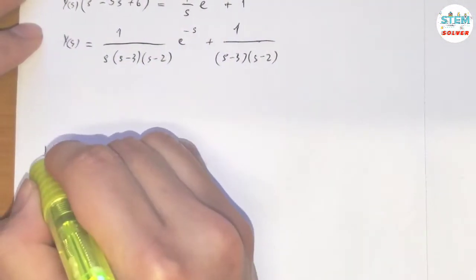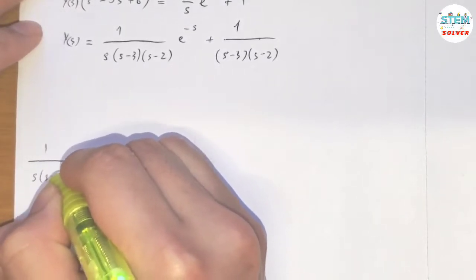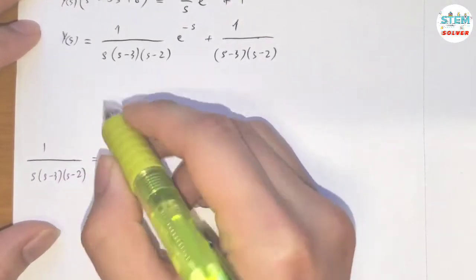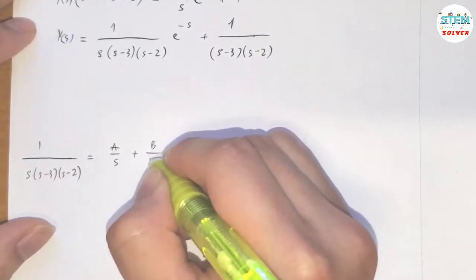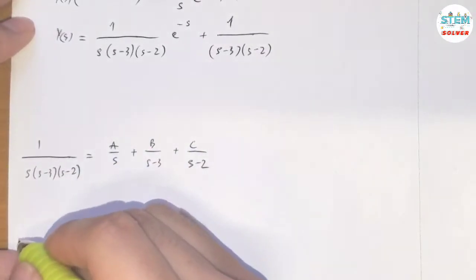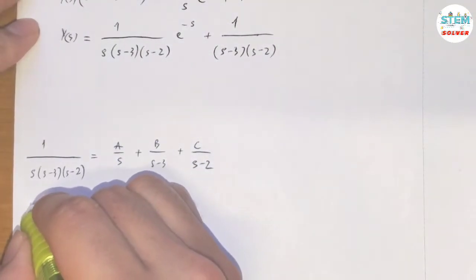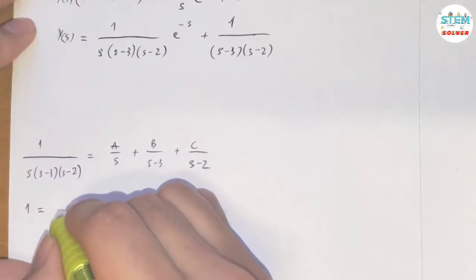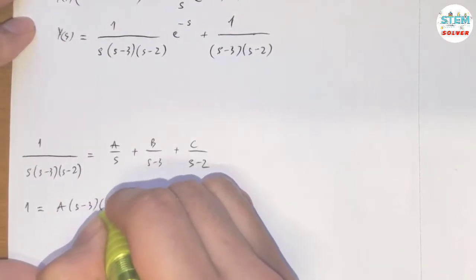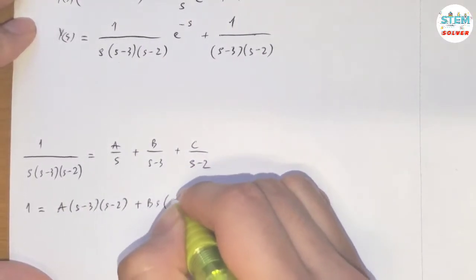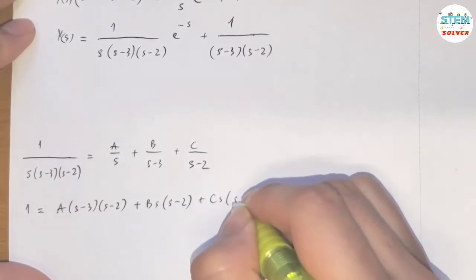For this one, using the decomposition method, we need to have a over s plus b over s minus 3 plus c over s minus 2, and the LCD is everything on the left side. So multiply by that LCD, I have a times s minus 3, s minus 2, plus b·s times s minus 2, plus c·s, s minus 3.